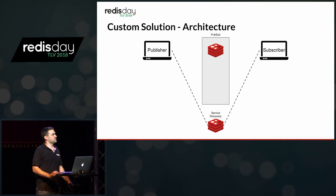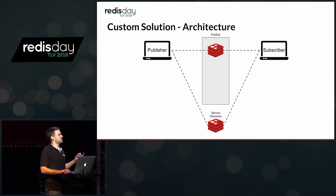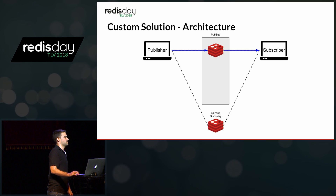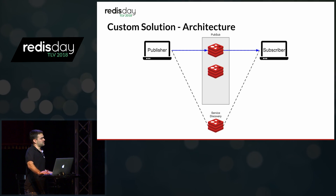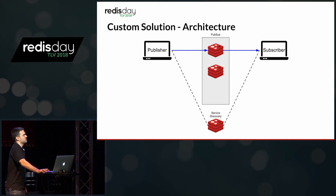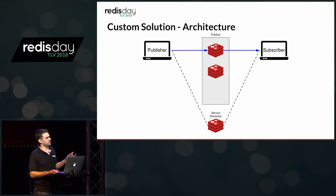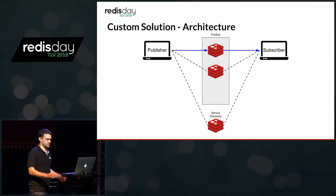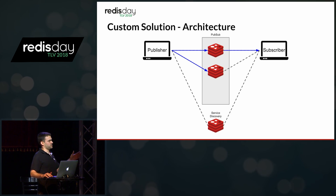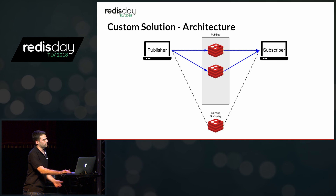The publisher and subscribers first connect to the service discovery to find out which nodes exist at the moment. Once they find out, they connect to that single Redis node, subscribe to channels, and start sending messages — just like the single Redis node example. But at some point the CPU will go up and we'll want another node to distribute messages. The new node connects to service discovery, registers itself, which in turn tells the subscriber and publisher about the new node. They connect to it using separate connections — these are all standalone servers, not a cluster. The publisher starts sending messages in a round-robin fashion, each message going to a different node, which in turn forwards them to the subscriber.